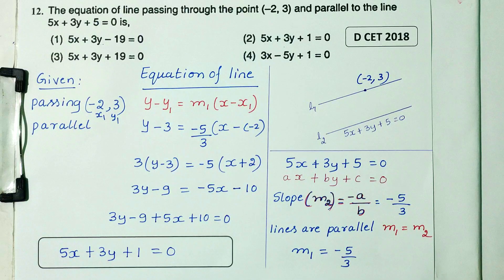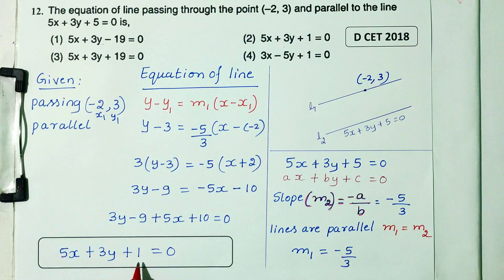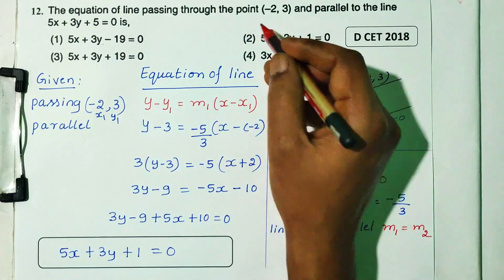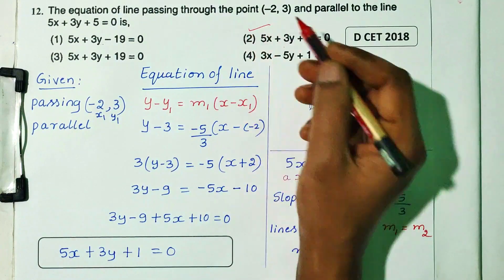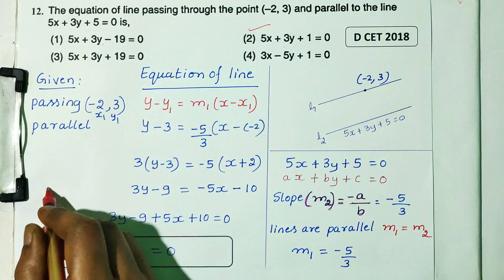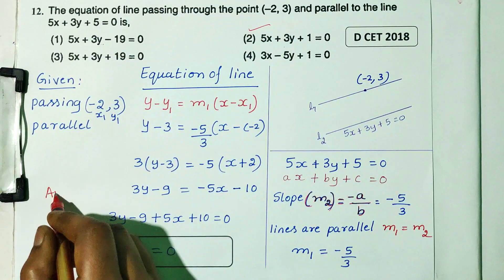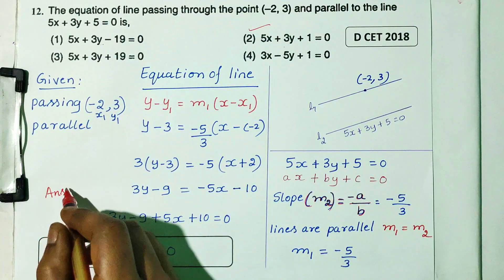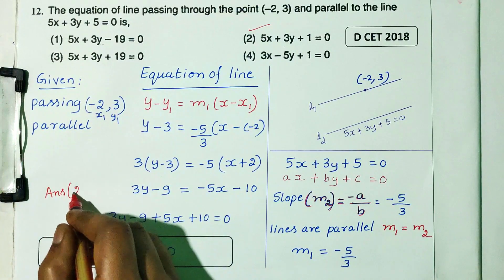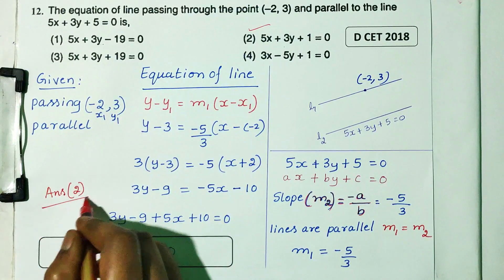The answer is 5x plus 3y plus 1 equals 0. Option second is the correct answer for DCT 2018 question number 12.